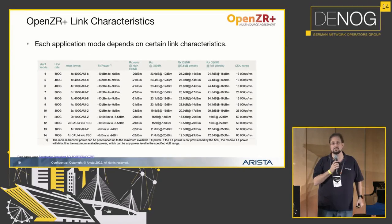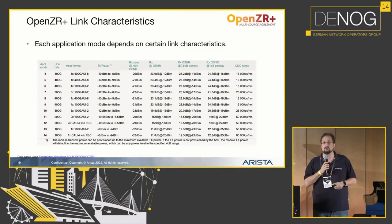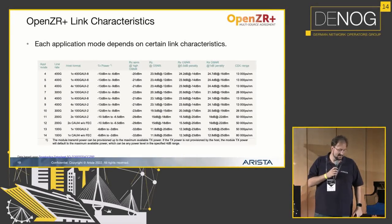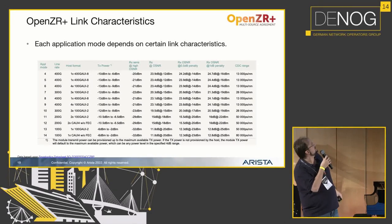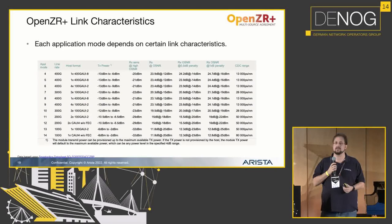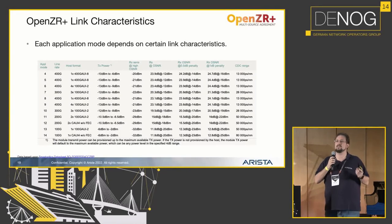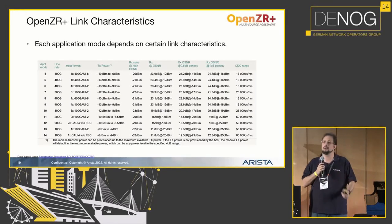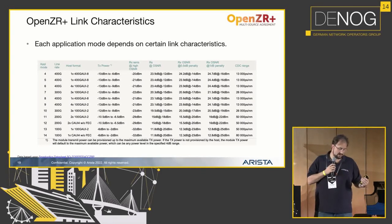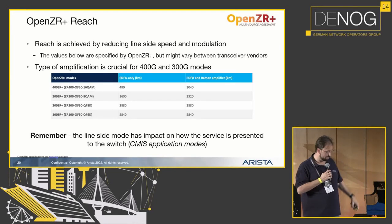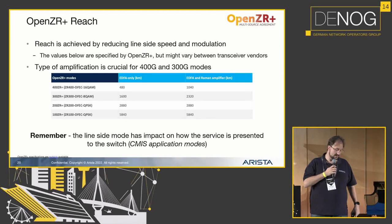Why would you use different application modes? Every application mode comes with its own link characteristics you need to run it in. For example, you can see mode 14 or 13 down here — this means you take a 400G optic, put it in 100G mode so only 100G comes out of it, but you can travel a very far distance. In fact, in 200G mode you could go up to 3,000 kilometers, and in 100G mode you could in theory go up to 6,000 kilometers — subsea cable range.